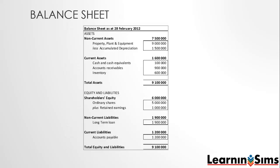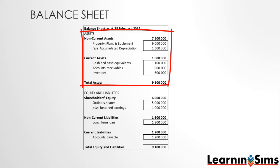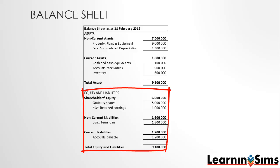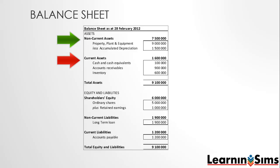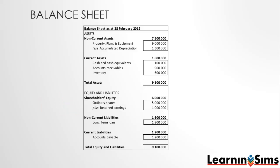The balance sheet indicates on top that it is for a specific date. It is then split into two sections: our assets and how they are financed, which is through either equity or liabilities. Both our assets and liabilities are then split between non-current and current. Non-current are all those assets or liabilities we expect to be around in more than 12 months' time. Current represents all those assets or liabilities which will either change form within 12 months or no longer be in existence. Our equity shows us how much our shareholders invested in the form of shares or capital, plus all profits which have been retained in the organization. Remember, the total of the assets must be equal to the sum of the equity and liabilities.